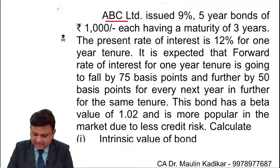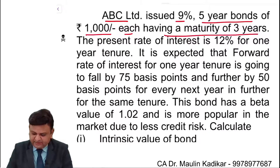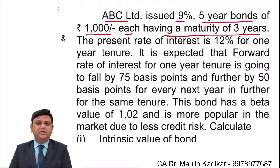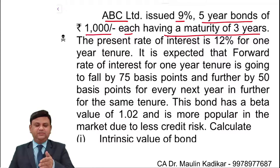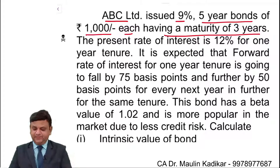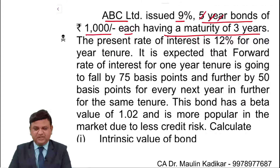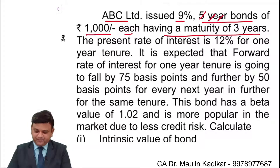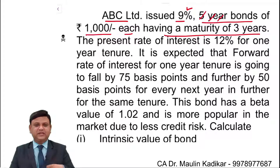ABC company issued a 9%, 5-year bond of Rs.1000 each, having a maturity of 3 years remaining — the original 5-year issuance is not important. The rate of interest is 9%, so 1000 x 9% gives a coupon amount of Rs.90.